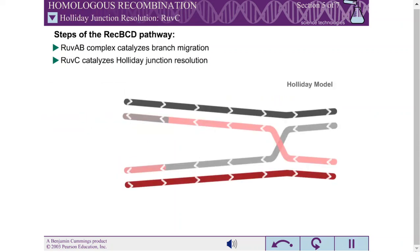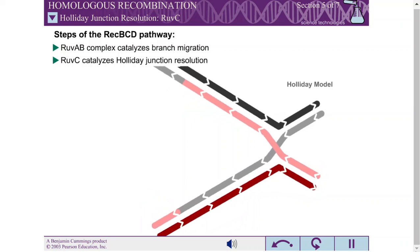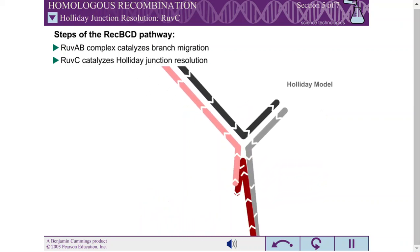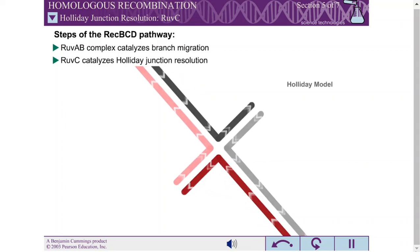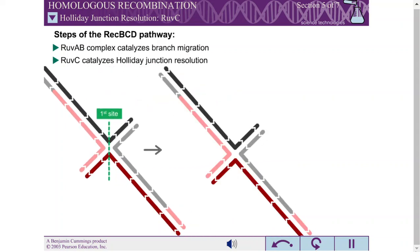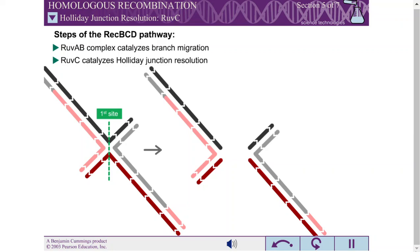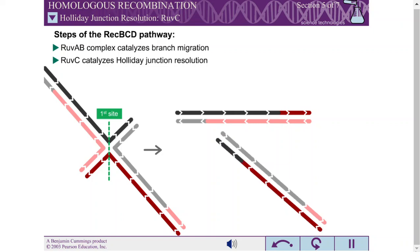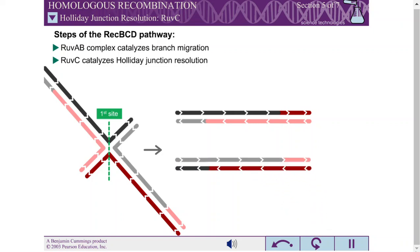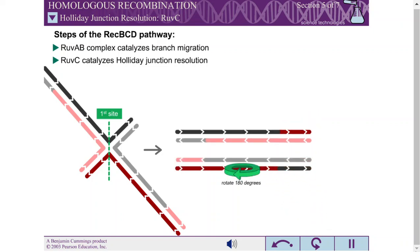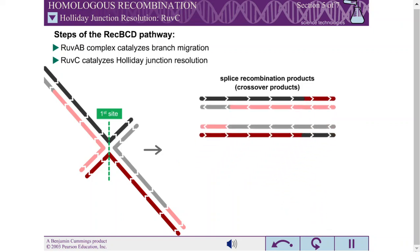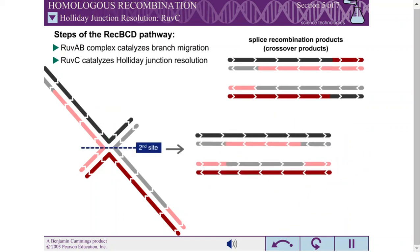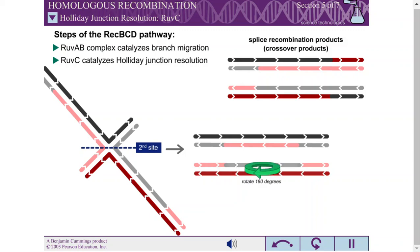The final step of the REC-BCD pathway is Holliday junction resolution. Again, this step is similar to that of the Holliday model, except it can involve two Holliday junctions. As will be shown, the possible products are the same: patch recombination products, also called non-crossover products, or splice recombination products, also called crossover products.